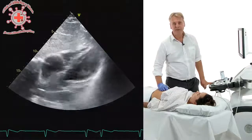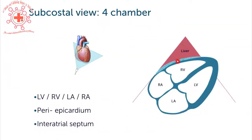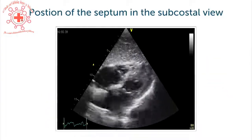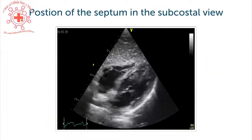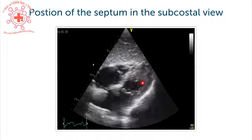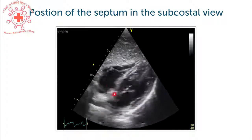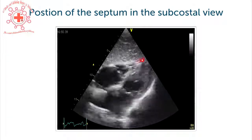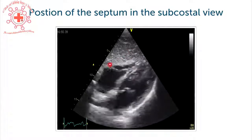Imaging atrial septal defects will come in the chapter on congenital heart disease. As a short review: we are seeing all four chambers; the right ventricle is closer to the transducer. We can see the peri- and epicardium very nicely below the liver, and we have a very perpendicular orientation to the interatrial septum. This is a subcostal view in a healthy individual — right ventricle, left ventricle, right atrium, left atrium. Note that there is no gap between the liver and the heart.